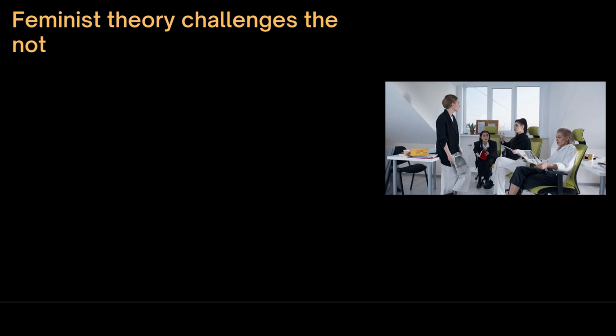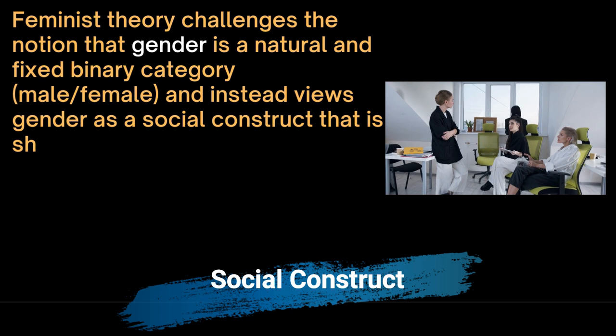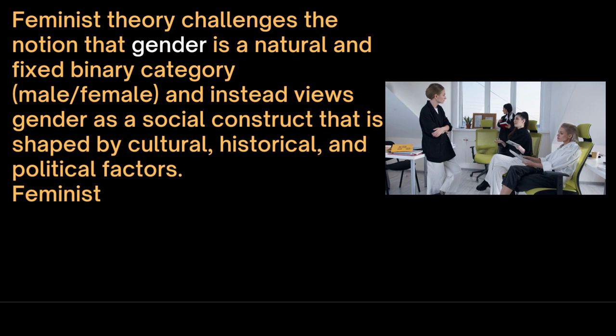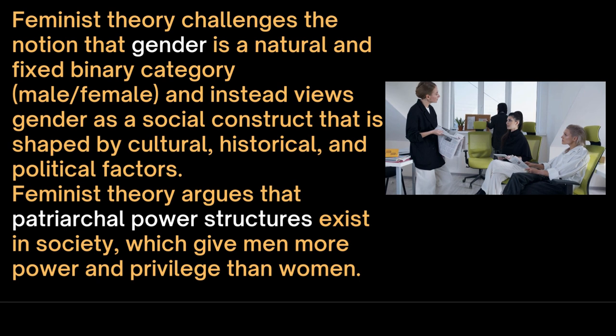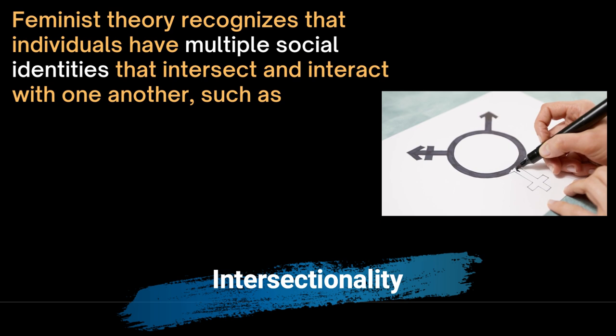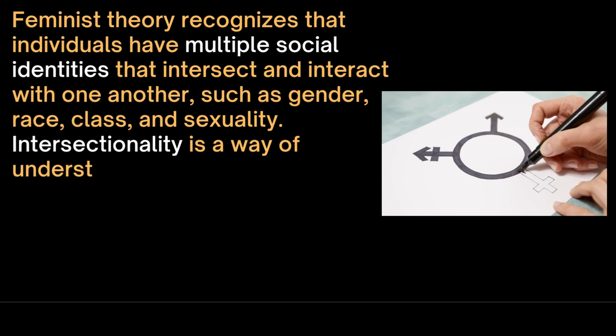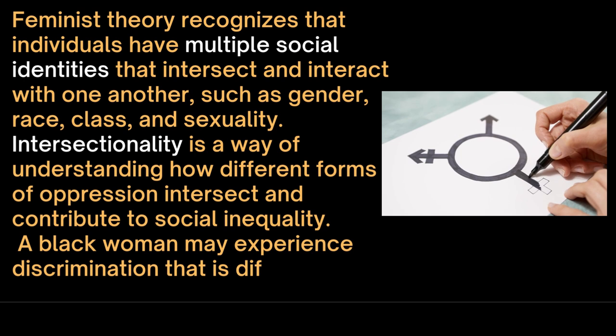Feminist theory challenges the notion that gender is a natural and fixed binary category — male or female — and instead views gender as a social construct that is shaped by cultural, historical and political factors. Feminist theory argues that patriarchal power structures exist in society, which give men more power and privilege than women. Feminist theory recognizes that individuals have multiple social identities that intersect and interact with one another, such as gender, race, class and sexuality.